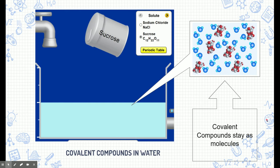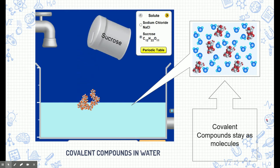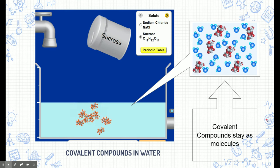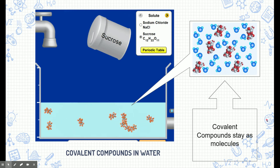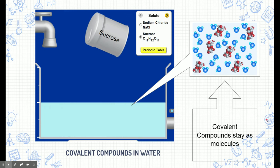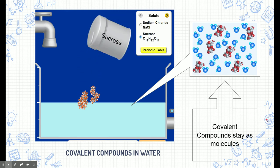Let's take a look at covalent compounds. Here's another simulation. Covalent compounds dissolve, but they typically stay as whole compounds. Here you can see sucrose, or sugar — think of a sugar cube being thrown in water. The sugar particles will break apart, but not down to their individual atoms. They're going to stay as whole sugar compounds.